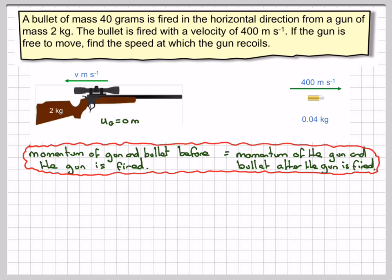Before the gun is fired, the velocity of the gun, UG, will be equal to 0 and also the initial velocity of the bullet will also be equal to 0.